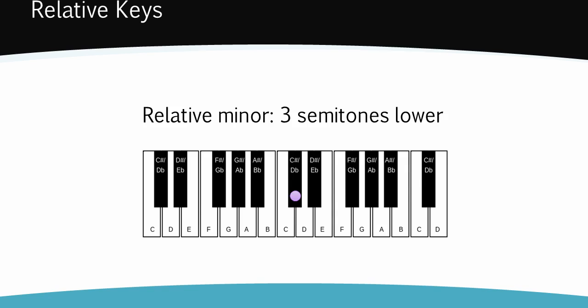If you count down three semitones from D flat, you end up on the note which is called both B flat and A sharp. D flat major is a flat key, the clue's in the name. So we choose B flat as the relative minor key and not A sharp.